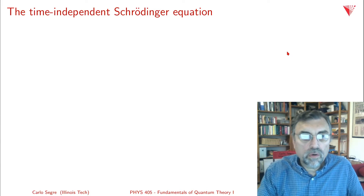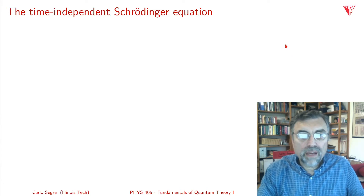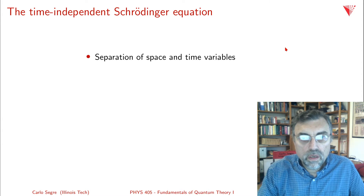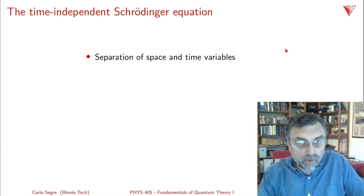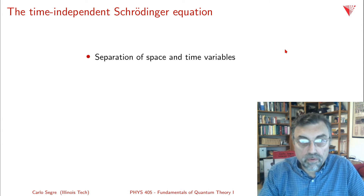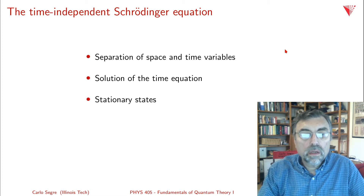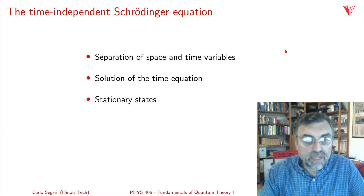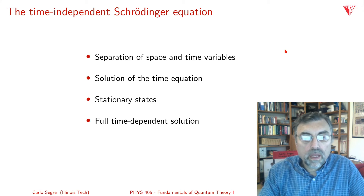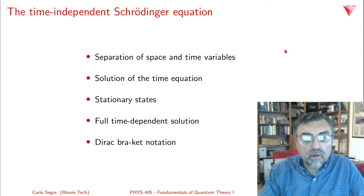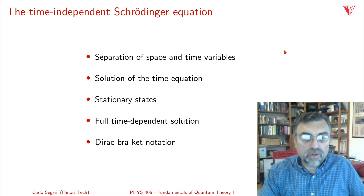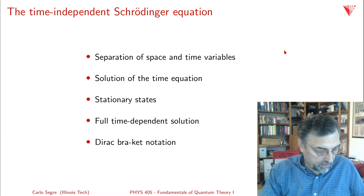In this video, we're going to talk about the time-independent Schrödinger equation. The first step is to separate the time and space variables, and then solve the time equation, define the notion of stationary states, and then write down the full time-dependent solution. Finally, I'm going to talk a little bit about the Dirac bracket notation, which allows us to use a shorthand that we'll use for the rest of the course.